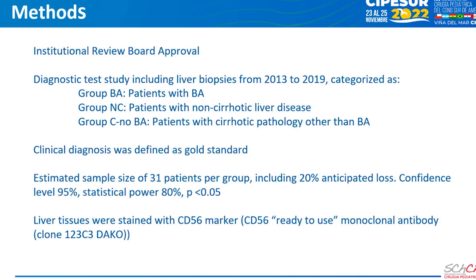Group C, no BA — patients with cirrhotic pathology other than biliary atresia, such as autoimmune hepatitis, neonatal hepatitis, and familial intrahepatic cholestasis, among others. Clinical diagnosis was defined as the gold standard.